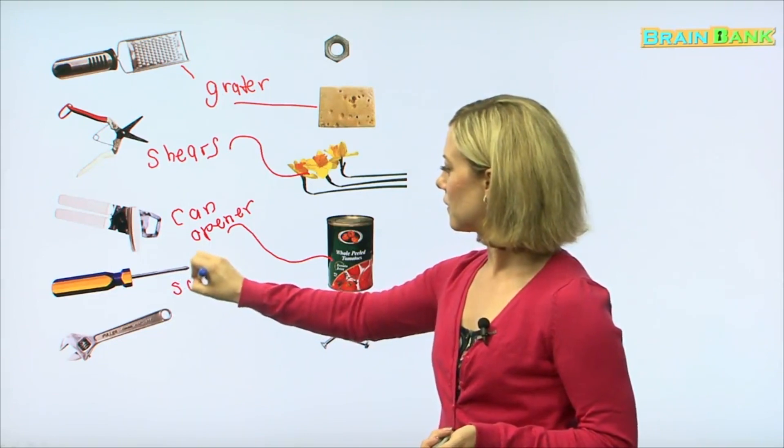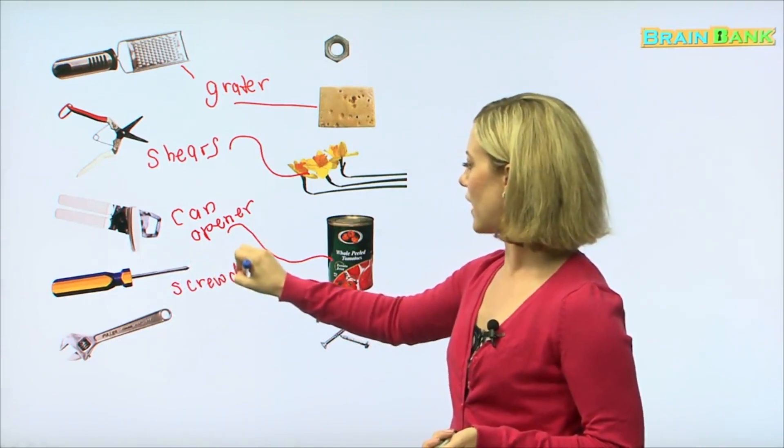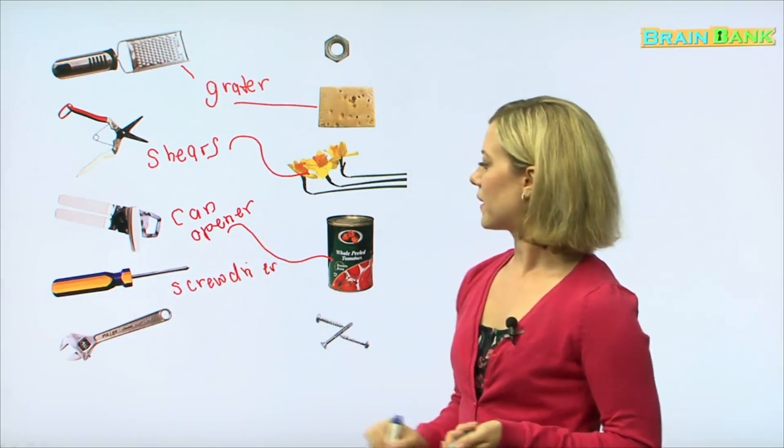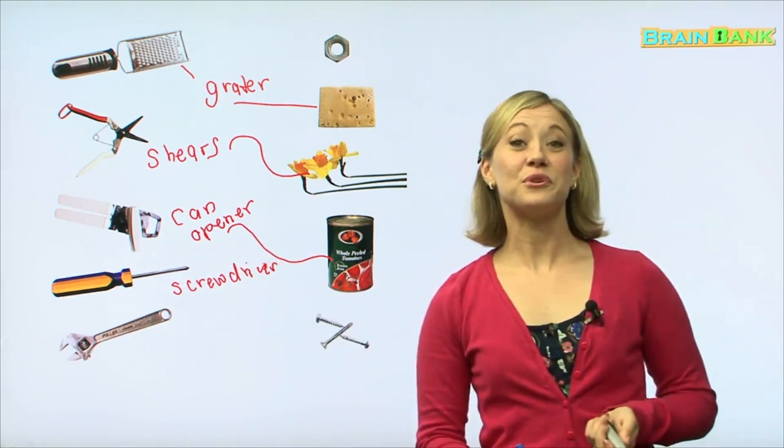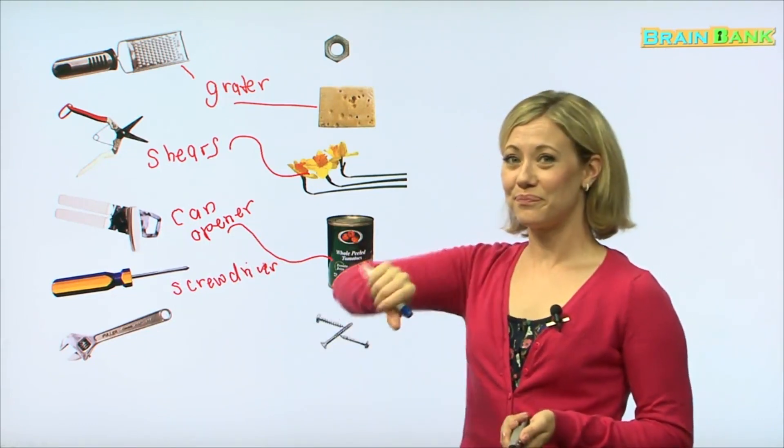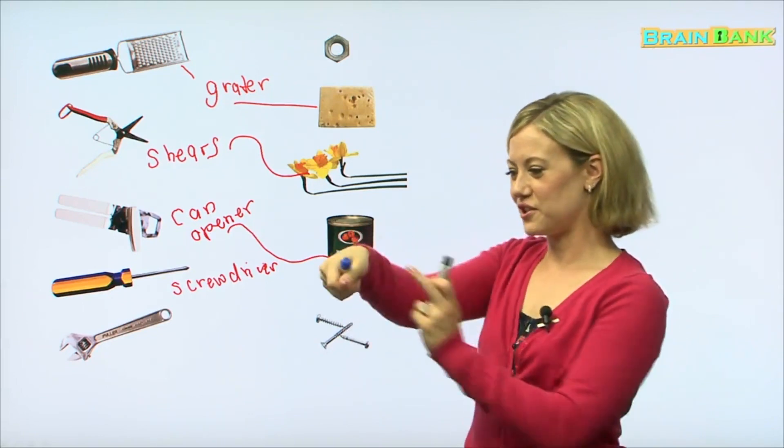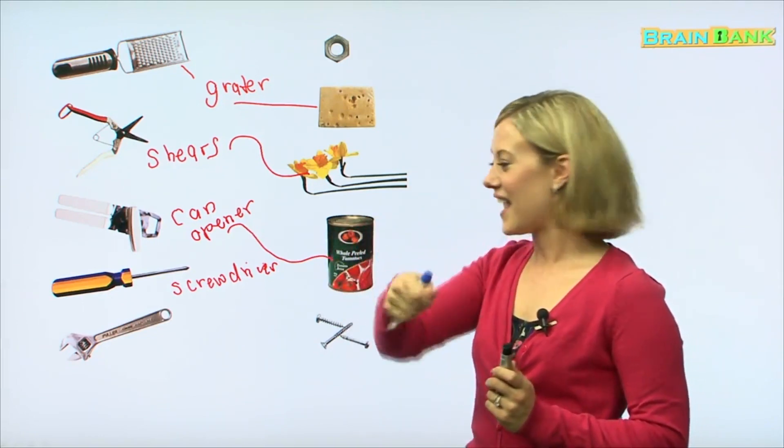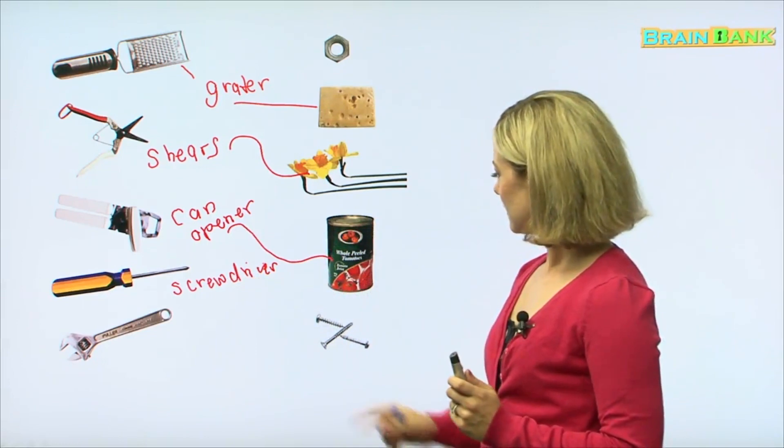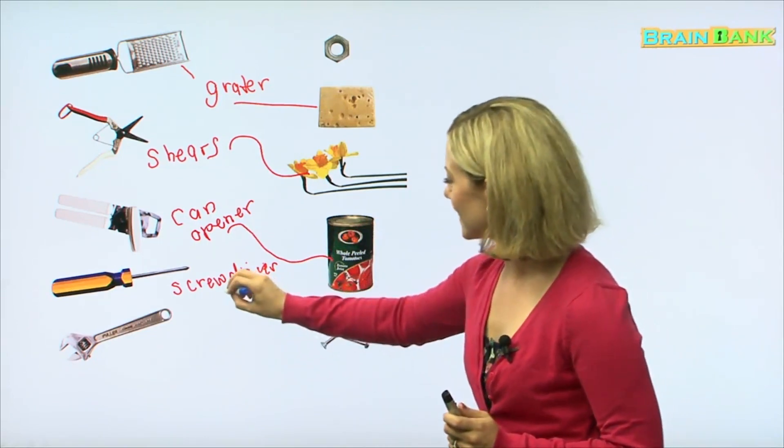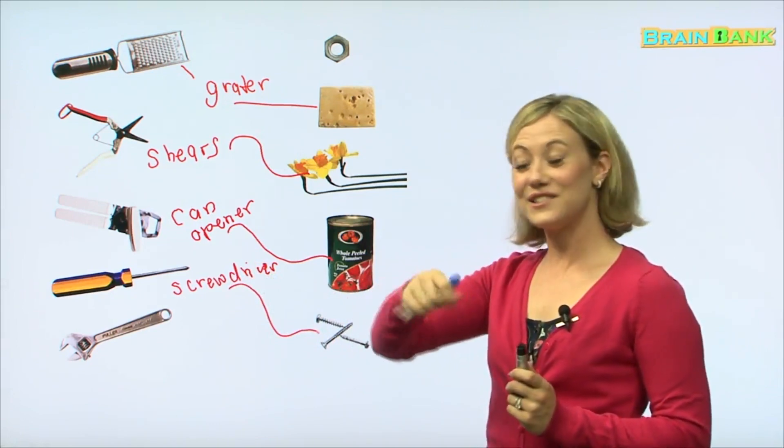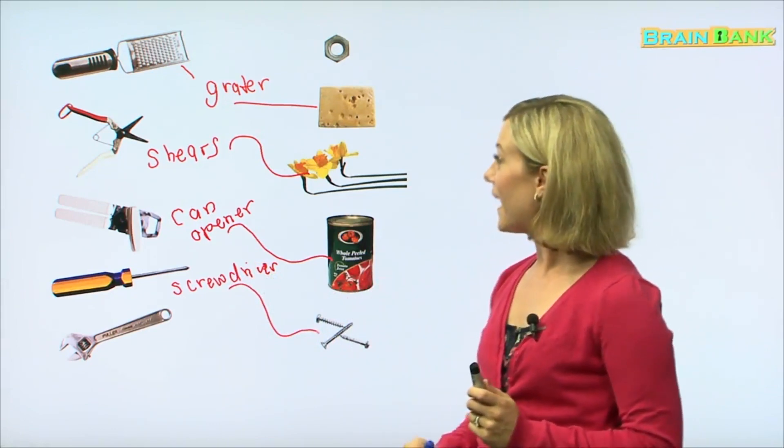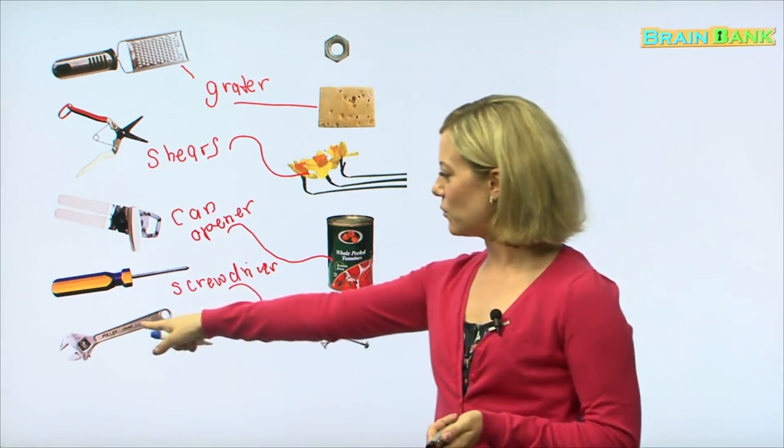Okay, next we have a screwdriver. Oh, and a screwdriver is used to twist, twist your wrist like this. And ah yes, we use it with screws. We use it to tighten screws. Very good.